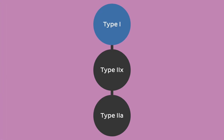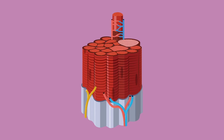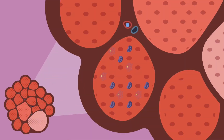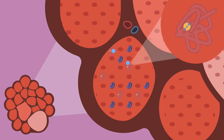Furthermore, type 1 fibres are well supplied by capillary networks relative to their size. The capillaries supply a large amount of oxygen to the myocytes, which use it to produce energy in the form of ATP. Also, these myocytes possess a large amount of myoglobin, which stores oxygen within the fibres, in a similar way that hemoglobin stores oxygen in red blood cells.